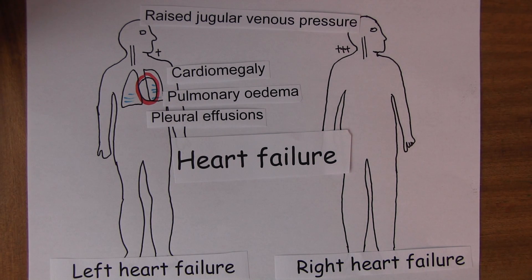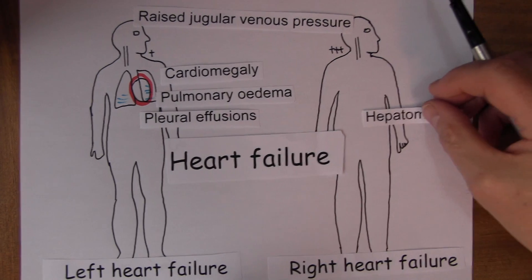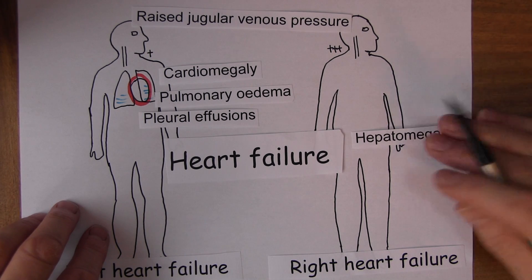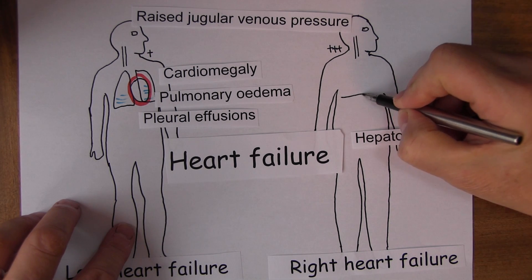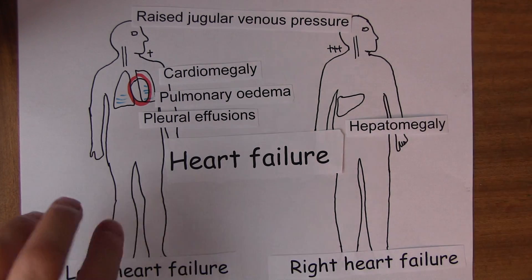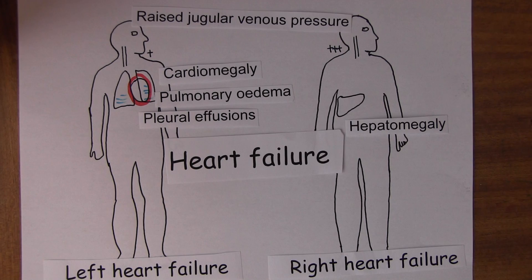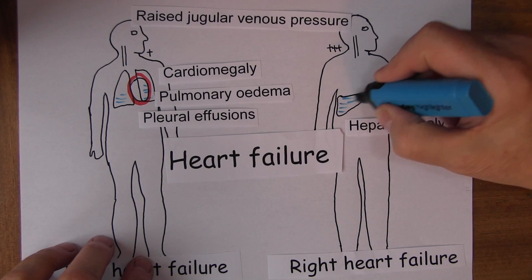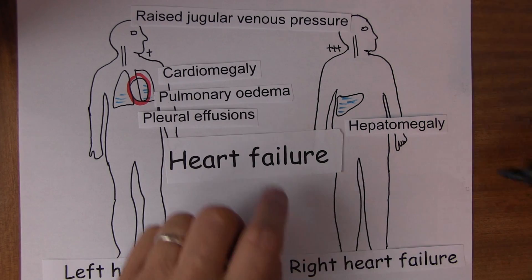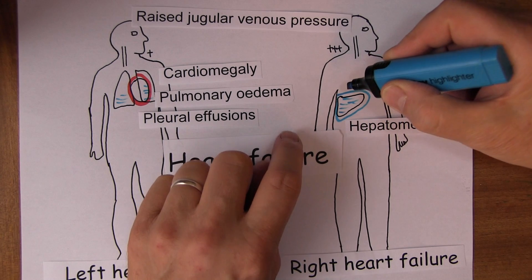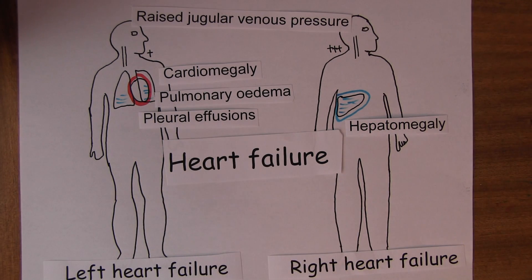Hepatomegaly is enlargement of the liver, and this is predominantly a feature of right heart failure. In right heart failure the liver becomes congested — there's fluid accumulation and congestion of the liver — and that causes the liver to get bigger. Hepatomegaly is therefore a feature of right heart failure.